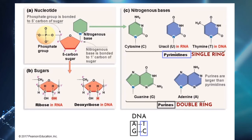Now I'll talk about the one I left behind. In RNA, instead of thymine, uracil links to adenine. And same as DNA, cytosine links to guanine. So by thymine and uracil, we can tell whether it is DNA or RNA.